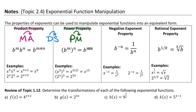Another exponent property not part of the acronym but very important is the negative exponent property. We don't like to leave answers with negative exponents, so we move that exponent down to the denominator as a positive power. For example, x to the negative three becomes one over x cubed. Two to the negative x power becomes one over two to the x. You can always take something out of the denominator by making its exponent negative.